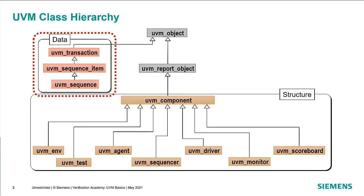Looking at the UVM class hierarchy again — we saw the component hierarchy in the previous session — there's a separate part for data. UVM sequence extends UVM sequence item, which extends UVM transaction, and both UVM transaction and UVM component ultimately extend from UVM object. Transactions, sequence items, and sequences are not part of the component hierarchy; they are just data, created and disappearing as we use them, making them much lighter weight than components.